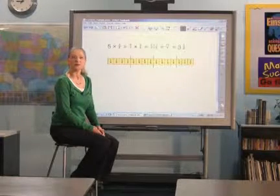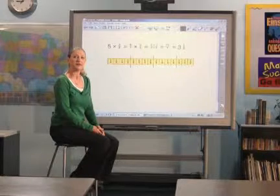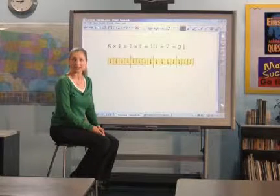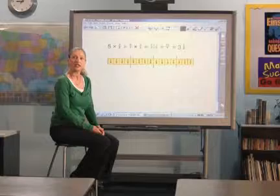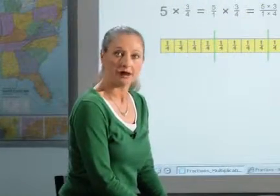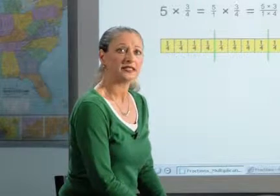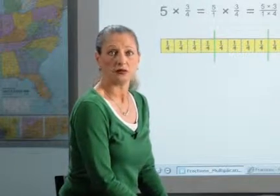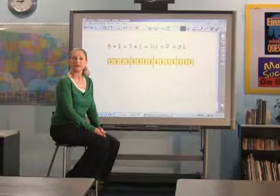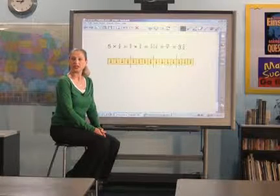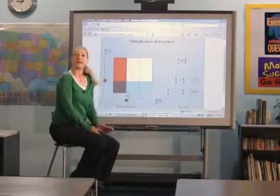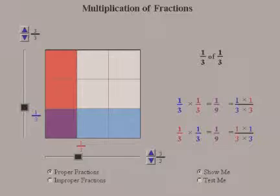Once students are comfortable multiplying a whole number by a fraction, they can begin multiplying a fraction by a fraction. Start by using simple examples and emphasizing the meaning of multiplication in which equal groups are combined. It is also helpful to use the term 'of' when stating the problems, asking what is 1/2 of 1/4? What if you had a half of a group of 1/4? Simple models can be used to represent these situations, such as a simple paper folding activity or this fraction manipulative found at the National Library of Virtual Manipulatives.